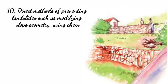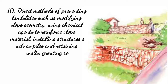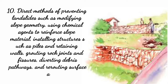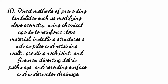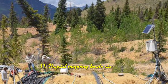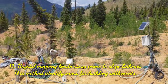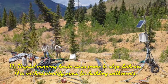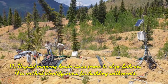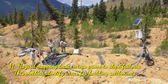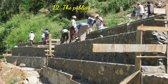Number 10: Direct methods of preventing landslides, such as modifying slope geometry, using chemical agents to reinforce slope material, installing structures such as piles and retaining walls, grouting rocks, joints, and fissures, diverting debris pathways, and rerouting surface and underwater drainage. Number 11: Hazard mapping locates areas prone to slope failures. This method identifies areas suitable for building settlements.